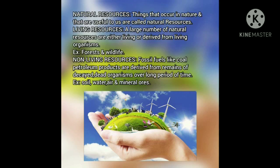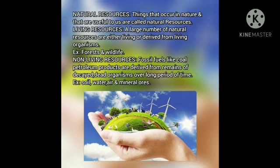We see various kinds of living and non-living things around us. So, what are natural resources? Things that occur in nature and that are useful to us are called natural resources. These are essential for our survival, and some of them are used for satisfying our needs. A large number of natural resources are either living or derived from living organisms — examples are forest and wildlife. Forest products like timber and animal products like leather are described as living resources. Non-living resources are derived from minerals of decayed dead organisms over a long period of time. Examples: soil, water, air and mineral ores.